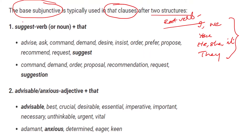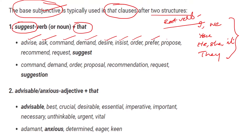First, certain verbs that suggest something — verb form or noun form — then plus 'that,' and the rest of the sentence carries the Subjunctive mode. Look at these words: Advise, Ask, Command, Demand, Desire, Insist, Order, Prefer, Propose, Recommend, Request, Suggest. When we use a subject with these verb forms plus 'that,' we have to use the Subjunctive form — the root verb form — with all subjects.